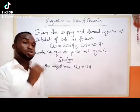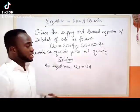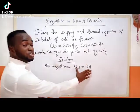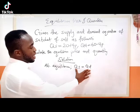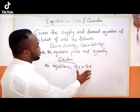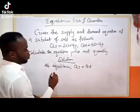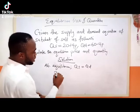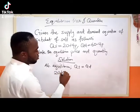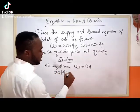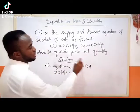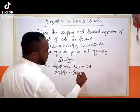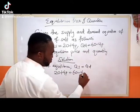At equilibrium, Qs must be equal to Qd. That is the essence of equilibrium. So we're going to have Qs, which is 20 plus 4p, equal to Qd, which is 60 minus 4p.